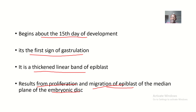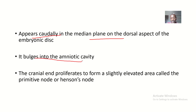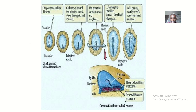It appears caudally in the median plane on the dorsal aspect of the embryonic disc. It also bulges into the amniotic cavity — this is the primitive streak growing and bulging into the amniotic cavity.